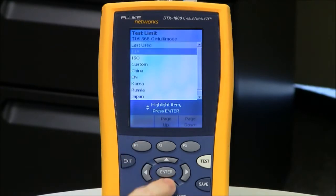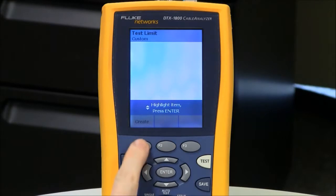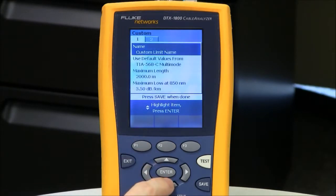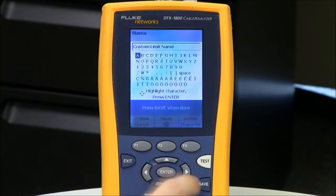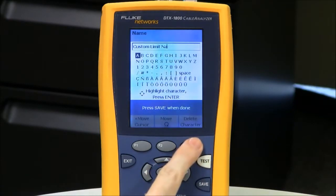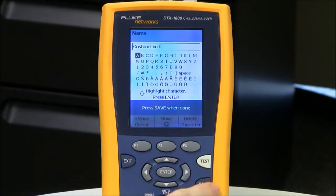Then F1 More, and go down to Custom. Hit Enter, F1 Create, and the first thing I need to do is to decide what I'm going to call this limit. So I'm going to hit Enter, and I'm going to keep it simple today, and just call it Custom Limit.